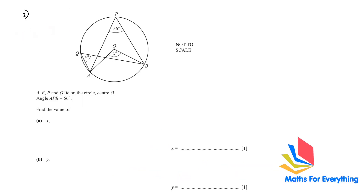Question number 2. A, B, P and Q lie on the circle, center O. Angle APB is 56. Find the value of X. They are both from the same chord A and B, so the angle at the center is twice the angle at the circumference. Therefore, X is equal to 56 times 2, which is 112.